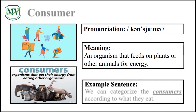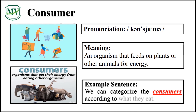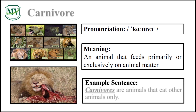Please repeat the word after me. Consumer. Good job! Let's spell it. C-O-N-S-U-M-E-R. Consumer. Great! We can categorize the consumers according to what they eat. Can you try reading the sentence on your own?